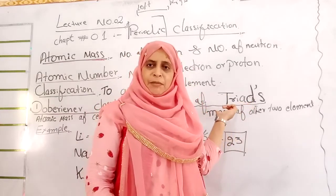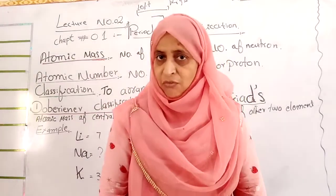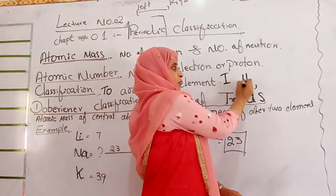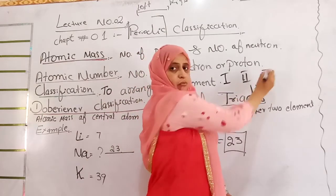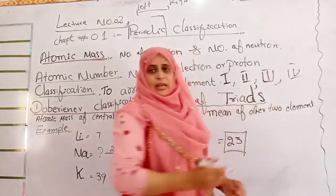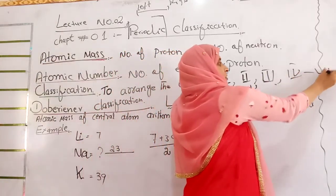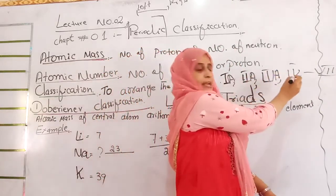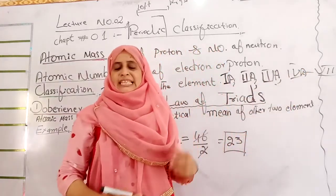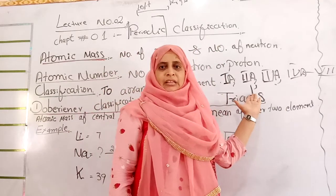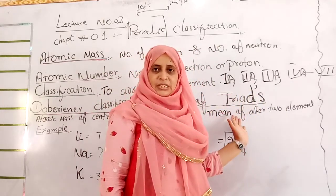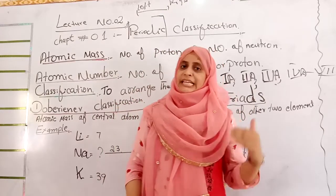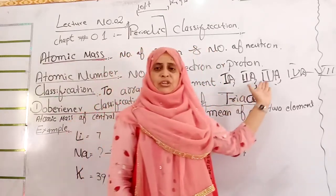The vertical column in the periodic table is called a group, running from first A through second A, third A, fourth A up to seventh A, and eighth A. Elements that show similar properties are placed in the same group, while those that show dissimilar properties are placed in different groups.